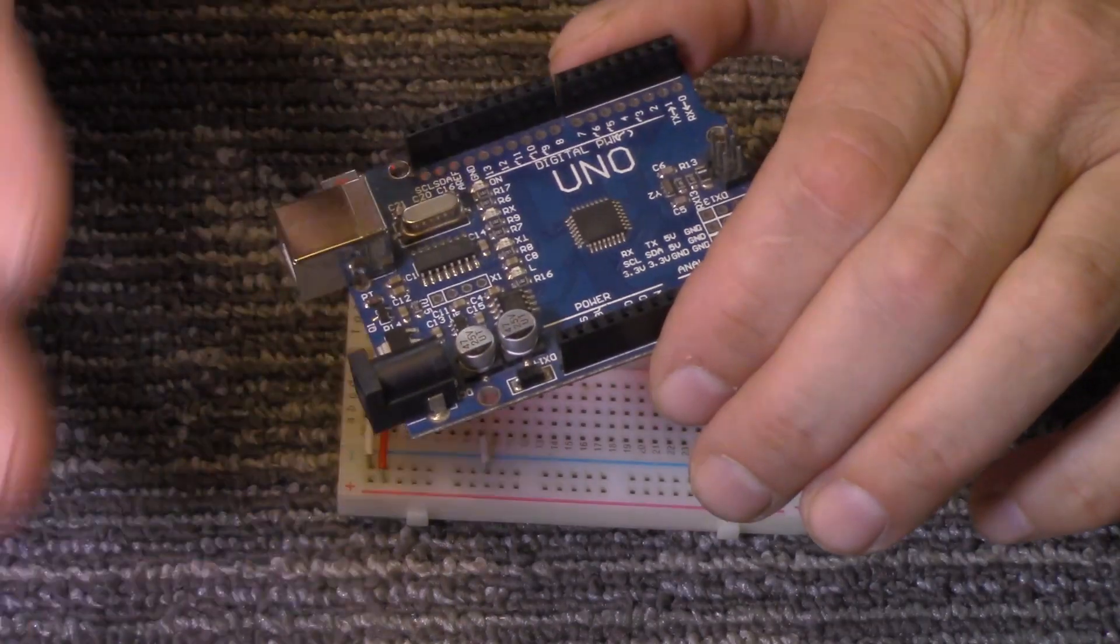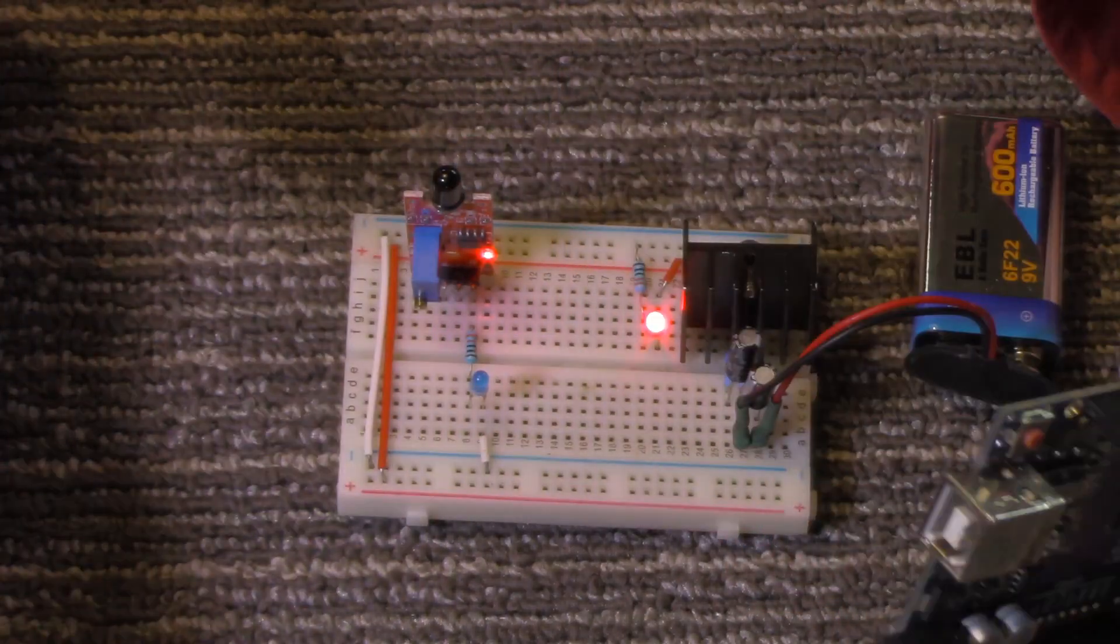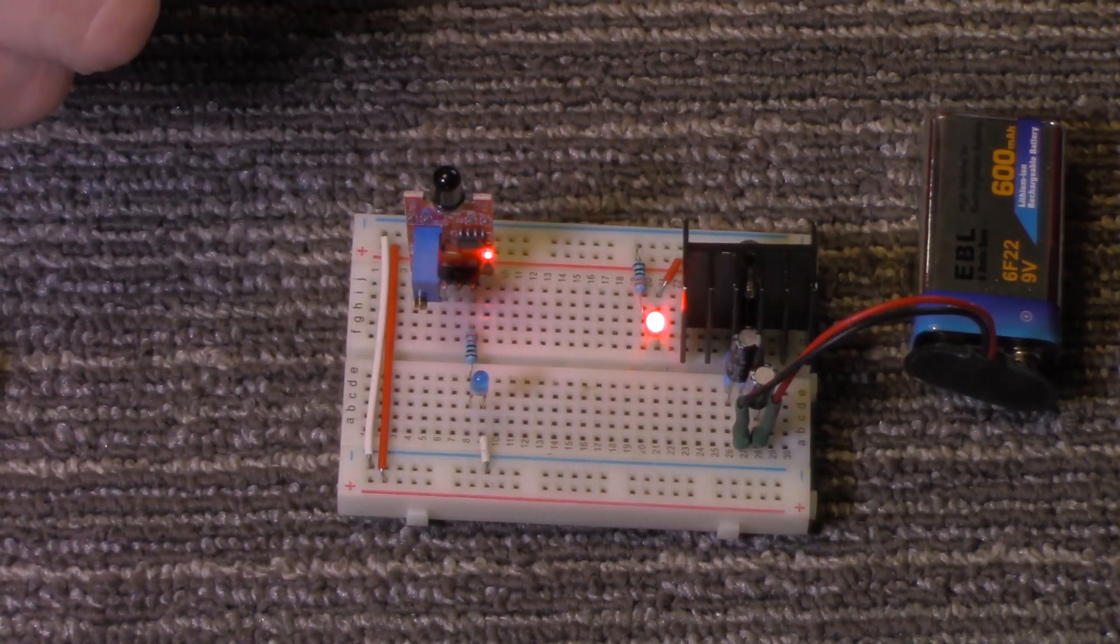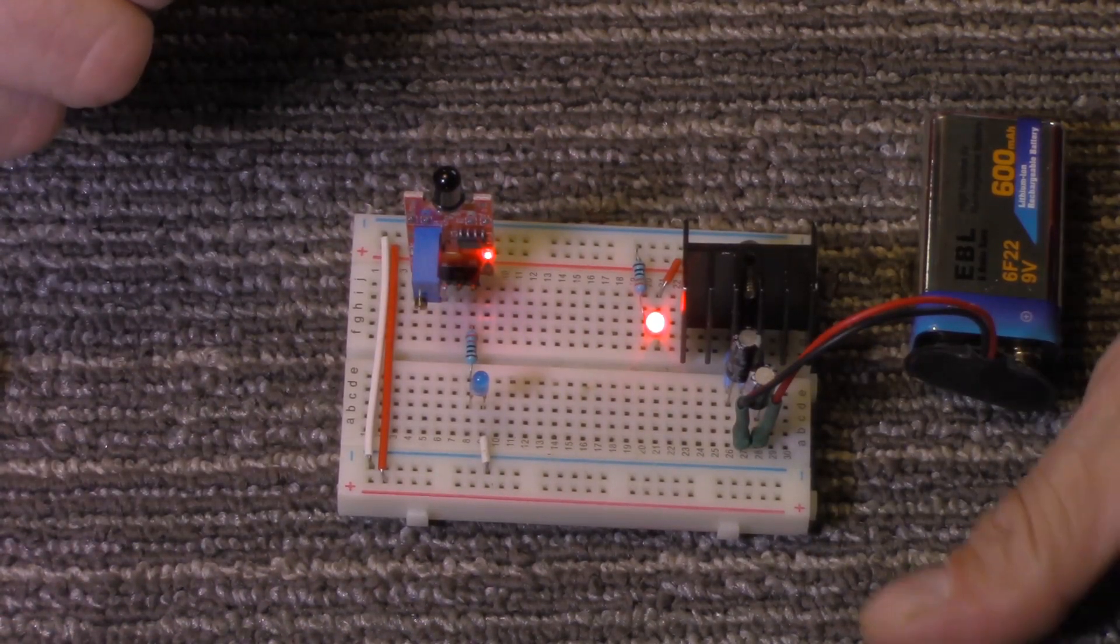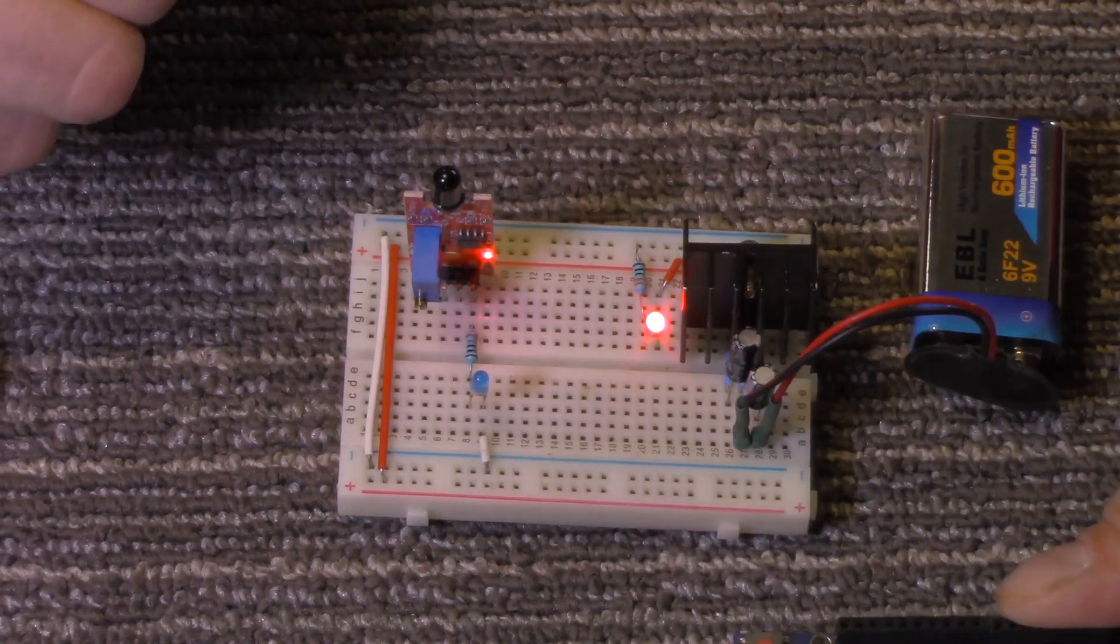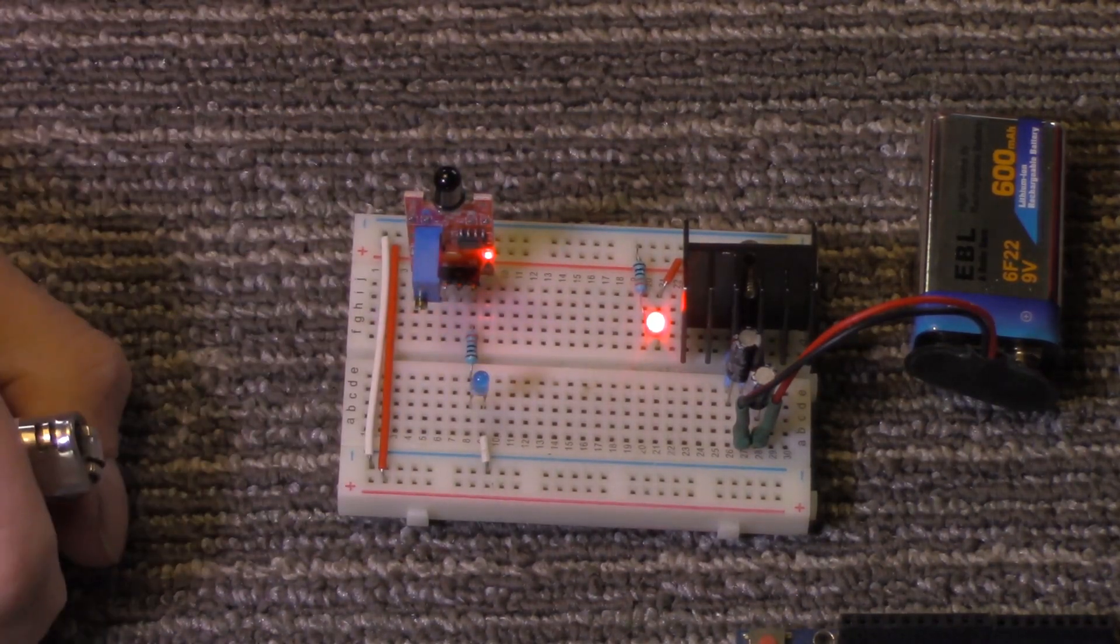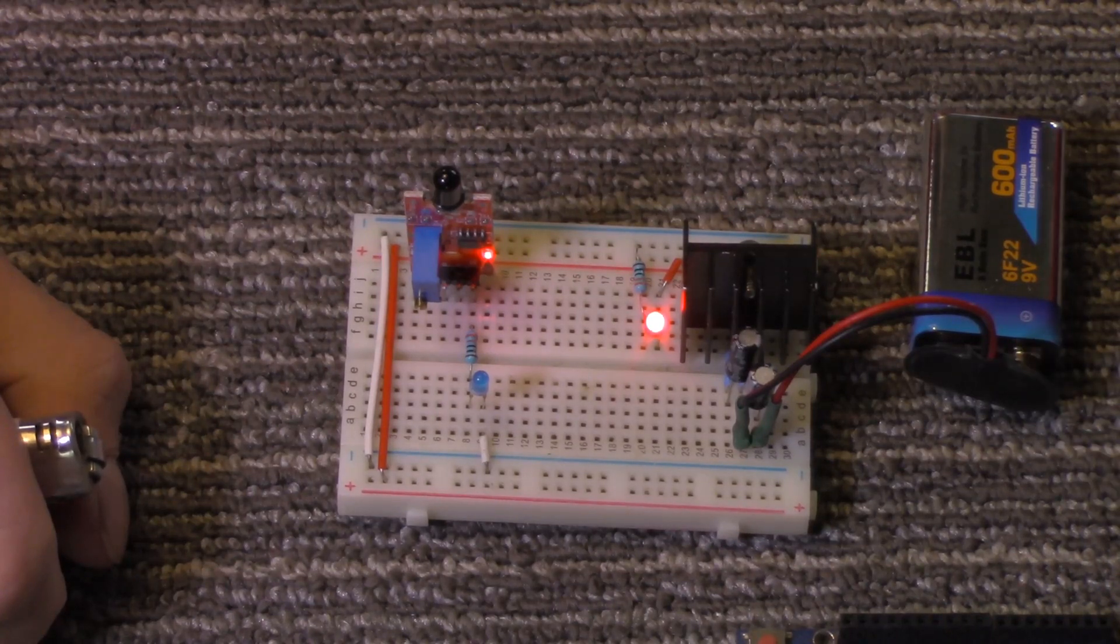So, just connect it to one of your Arduino pins, and in the program, have in the sketch: if digital read, whatever pin you have it on goes high, that means it's detecting a flame, and then you could have this set off an alarm, or whatever.